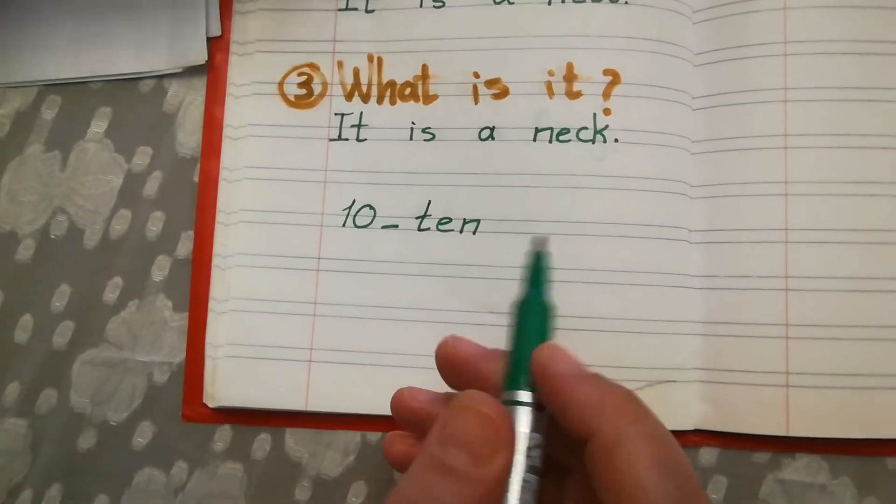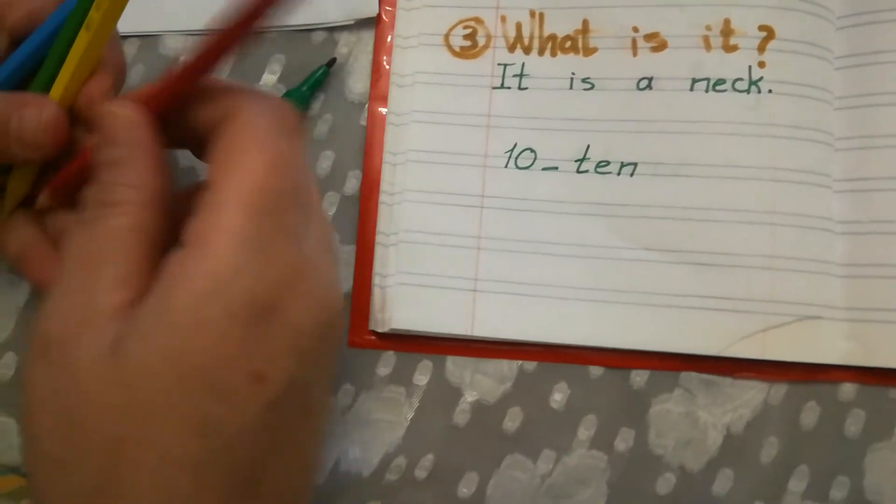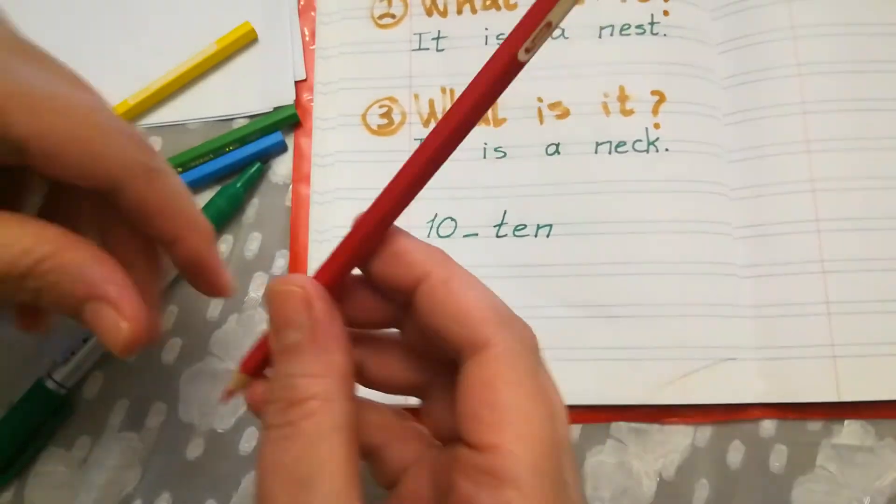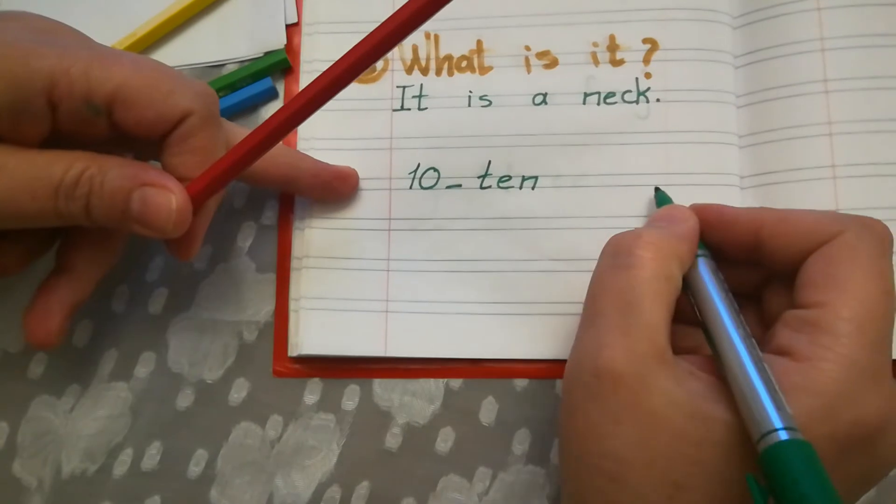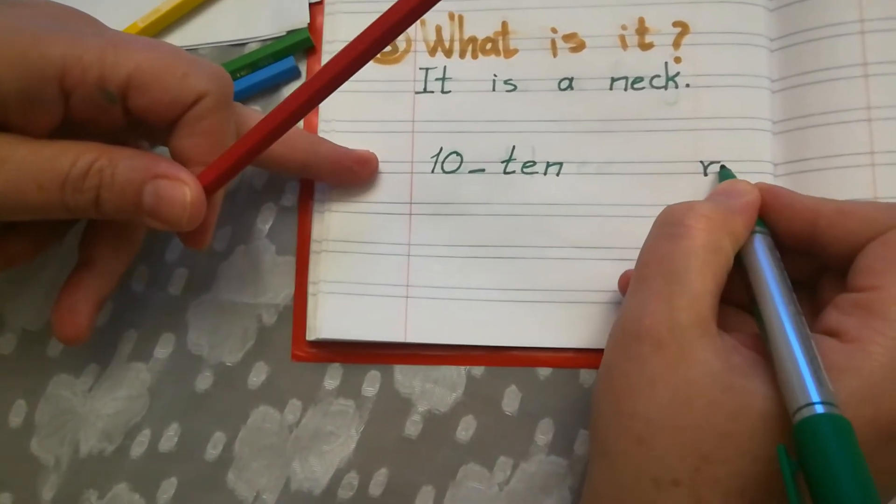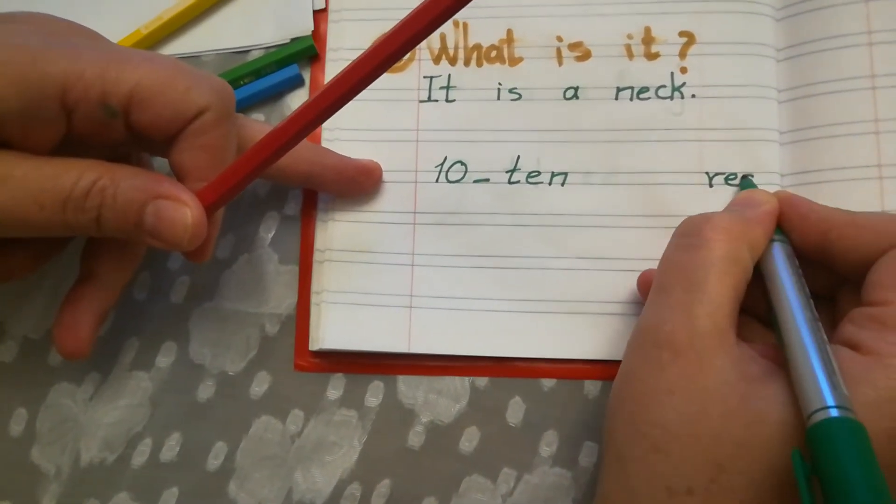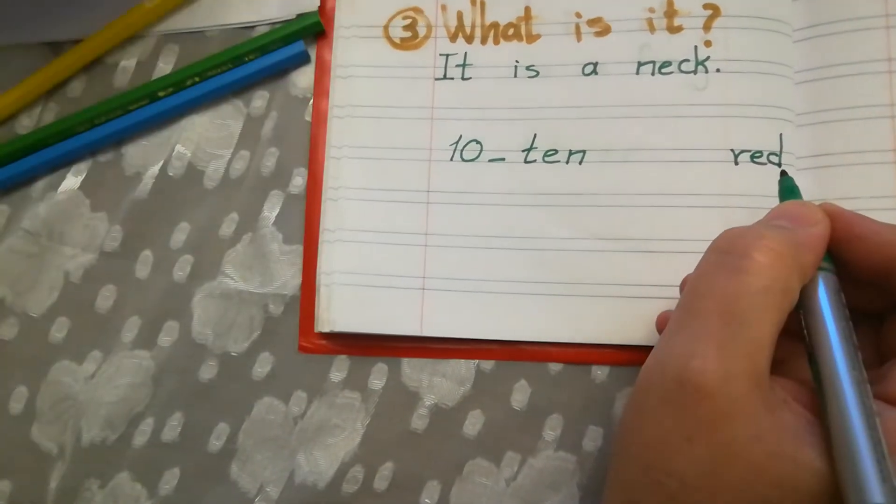Let's revise the colors. What is this color? Excellent. KG2. This is red. Red. R-E-D. Red. Next.